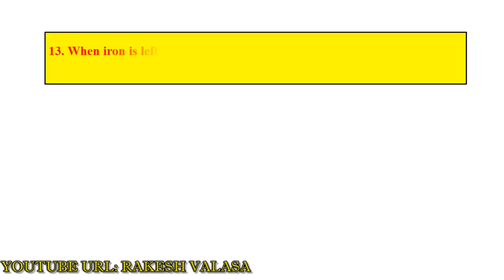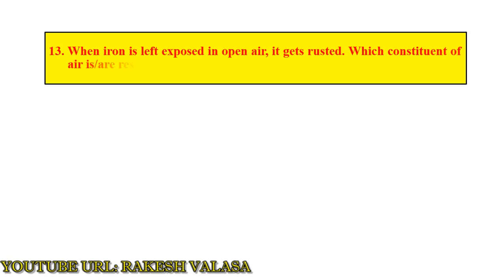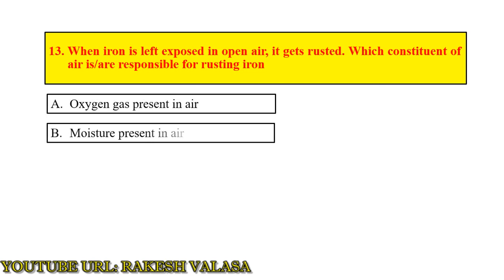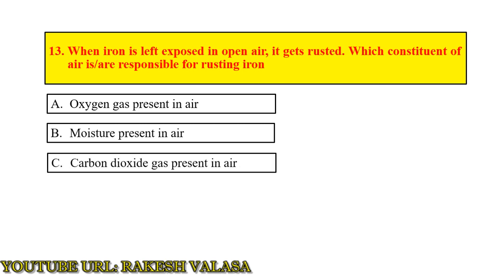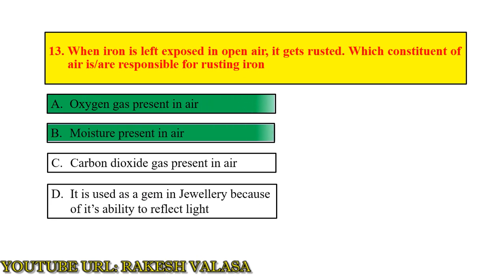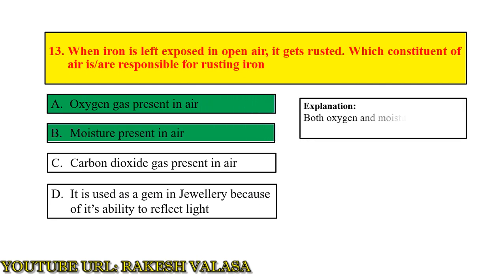Question number 13: when iron is left exposed in open air, it gets rusted. Which constituent of air is responsible for rusting of iron? Answer: oxygen gas and moisture present in air. Explanation: both oxygen and moisture present in air cause rusting of iron.